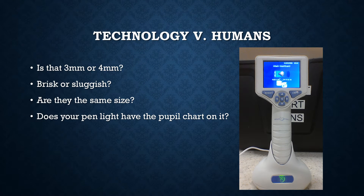Looking at technology versus us humans — what is the biggest advantage to using this piece of equipment? It removes subjectivity. As humans, we are providing subjective data to our electronic health records. I may consider a reaction brisk while you may consider it sluggish. Do I have a pen light that's brighter than yours? Do I have the little pupil chart that tells me what each millimeter looks like visually? We erase all of that. We become very objective when using this technology because it is the same measurement time after time. The big advantage is the objectivity of the data.